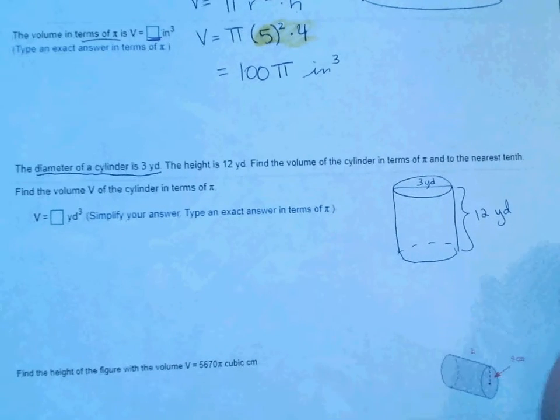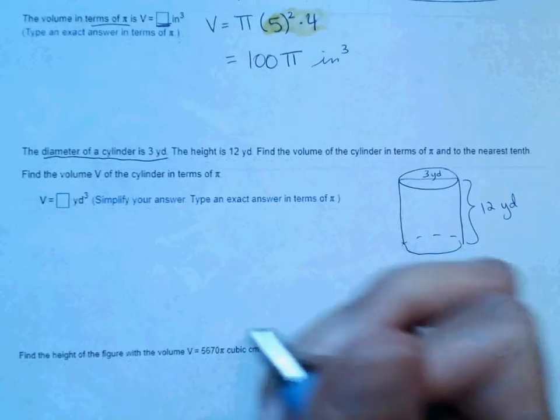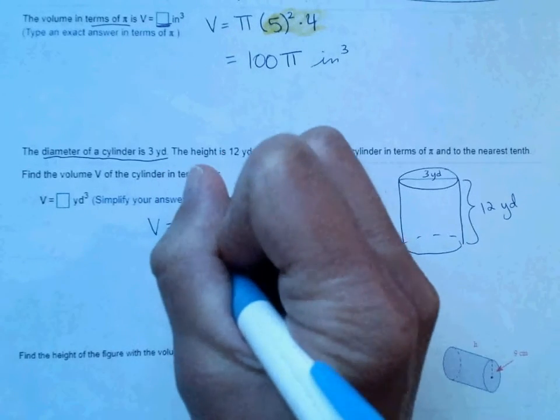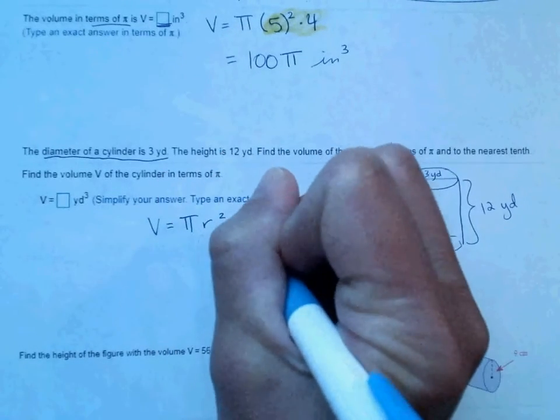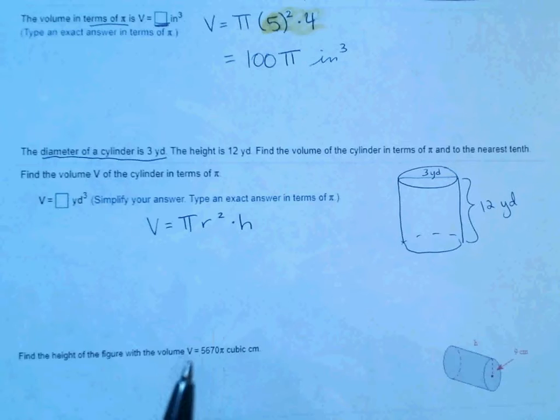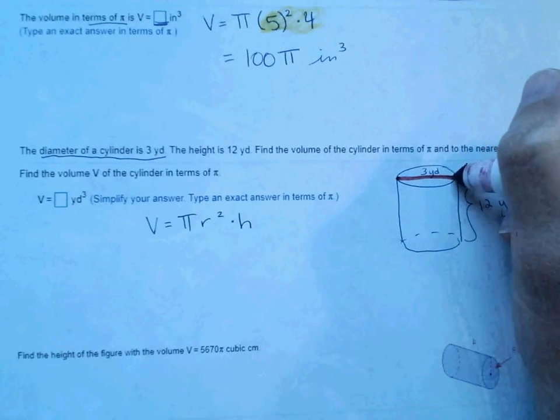Alright, and then find the volume. Okay, so volume is equal to pi times the radius squared times the height. Okay, so hopefully you realize here, I need the radius. This 3 is the diameter.